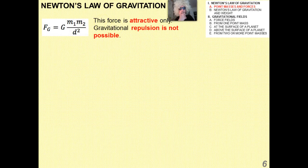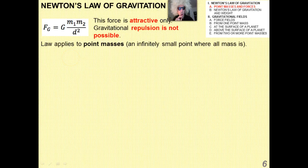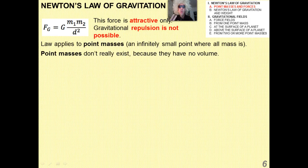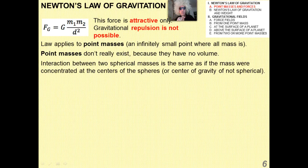A couple of important things about gravity: first, gravity is attractive only. You cannot have two objects repelling each other gravitationally — that has never been discovered anywhere in the universe. The law only applies to point masses — an infinitely small point where all the mass is considered concentrated. Point masses don't really exist because they have no volume. The interaction between two spherical masses is the same as if all the mass were concentrated at the center of the sphere, or the center of gravity if it's not spherical.